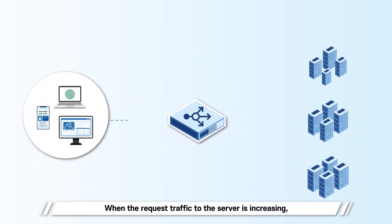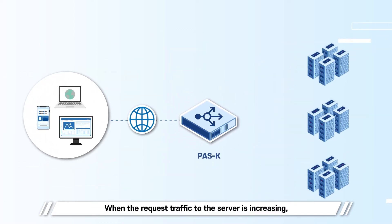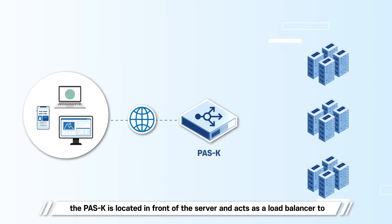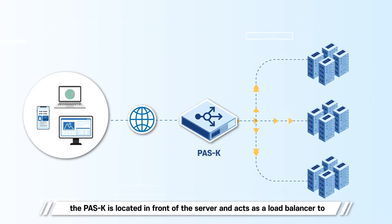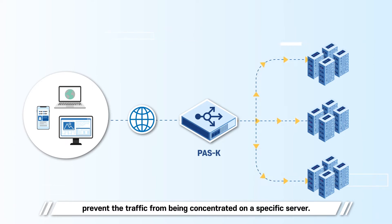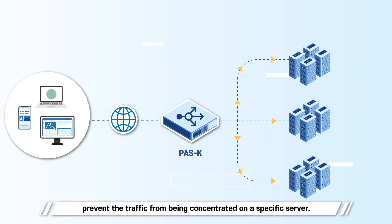When request traffic to the server is increasing, PASK is located in front of the server and acts as a load balancer to prevent traffic from being concentrated on a specific server.